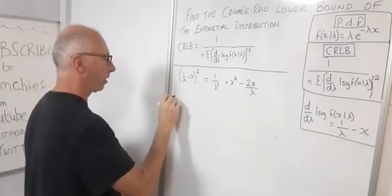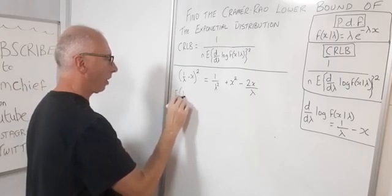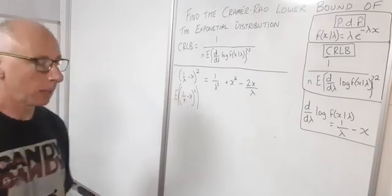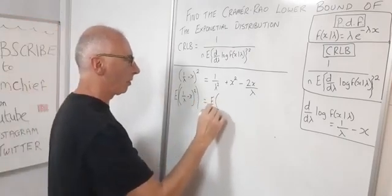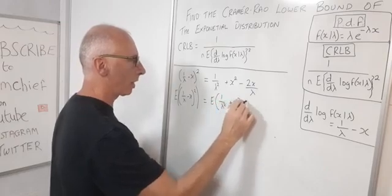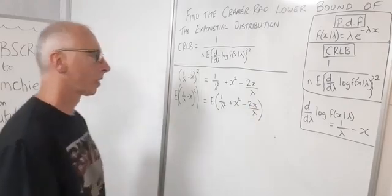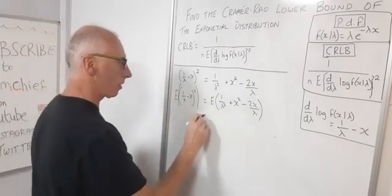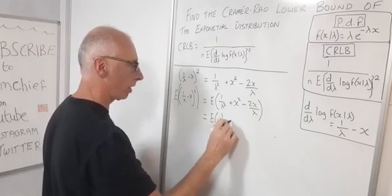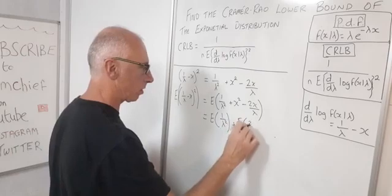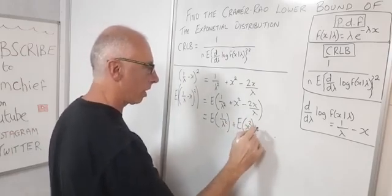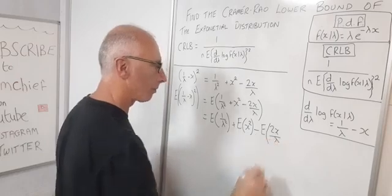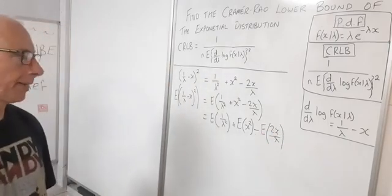Now let's take the expected value of (1/lambda minus x) squared. We have the expected value of 1/lambda squared plus x squared minus 2x/lambda. By the linearity of expectation we can break this apart into E[1/lambda squared] plus E[x squared] minus E[2x/lambda].